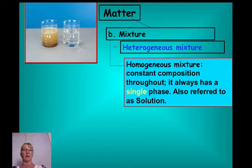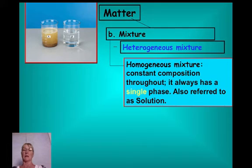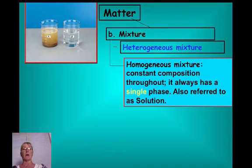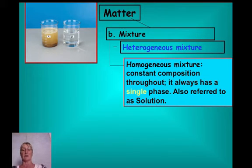Besides a heterogeneous mixture, you could have a homogeneous mixture. 'Homo' means same. A homogeneous mixture has uniform, constant composition throughout — if it were salt water, it would taste salty everywhere. It is clear throughout and has only a single phase, meaning you can't see distinct layers as in beaker A. This is also called a solution.